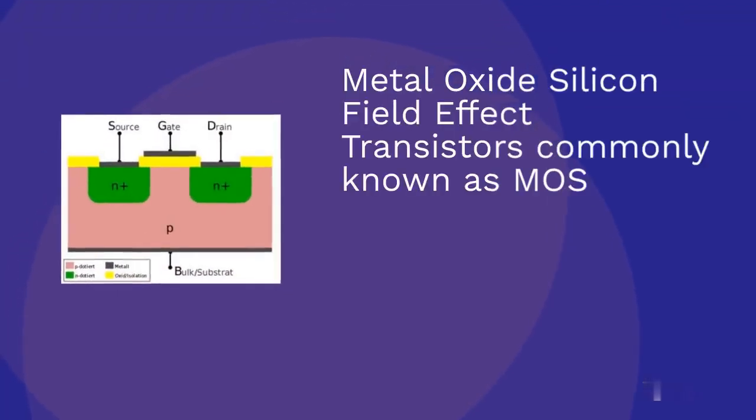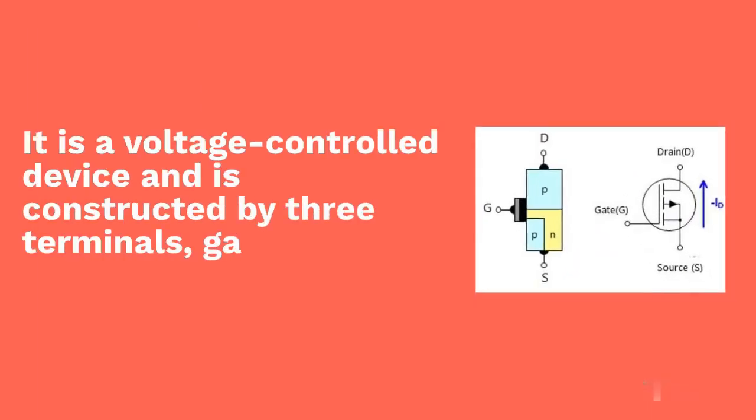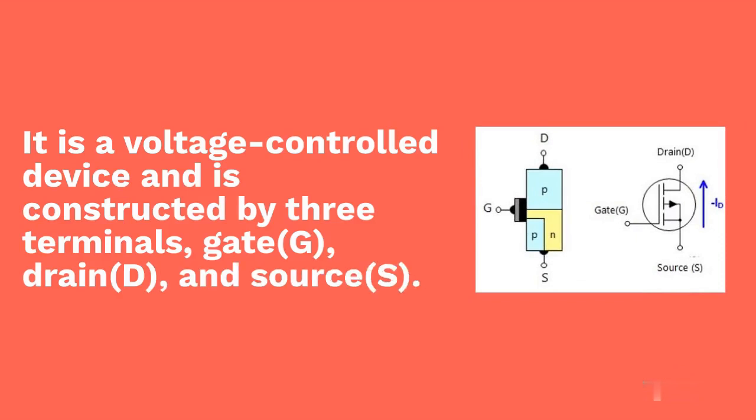Metal-oxide silicon field-effect transistors, commonly known as MOSFETs, are electronic devices used to switch or amplify voltages in circuits. It is a voltage-controlled device and is constructed by three terminals: gate G, drain D, and source S.